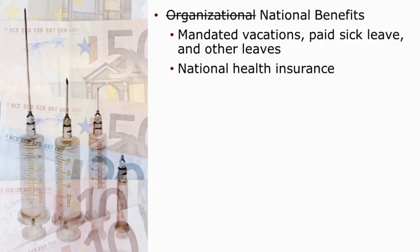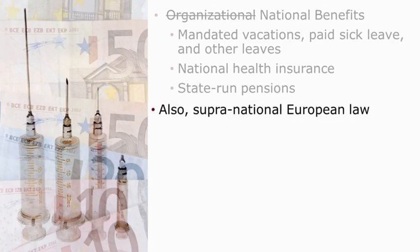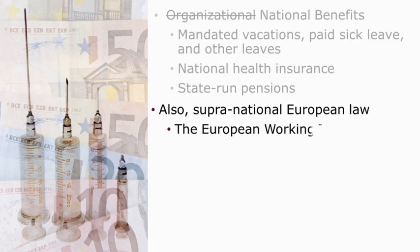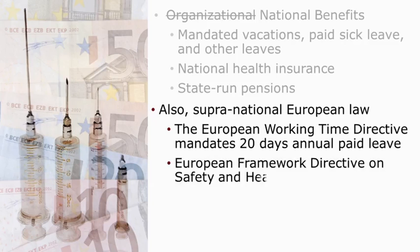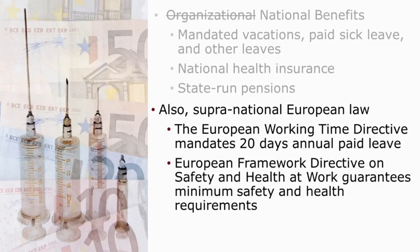There's also national health insurance found frequently in many countries outside of the United States, and similarly for state-run pension plans. The emphasis here is that in many other countries, benefits can be national rather than organizational. In the European Union, there's also the additional fact that above national level policies there can be supranational policies at the EU level. For example, the European Working Time Directive mandates 20 days of annual paid leave — Sweden requires 25, so countries are able to do more. But this provides a floor across the entire European Union. There's also a framework directive on safety and health at work, which provides minimum safety and health requirements across all European Union countries.